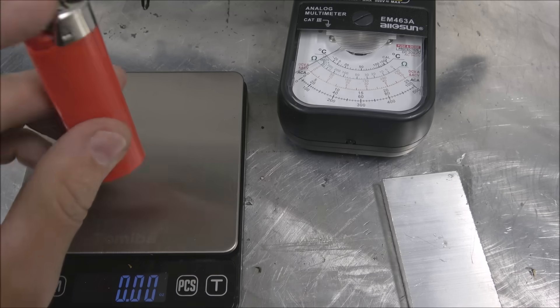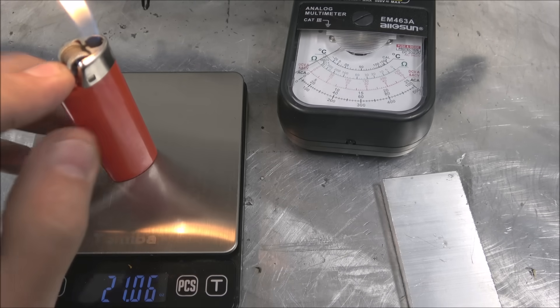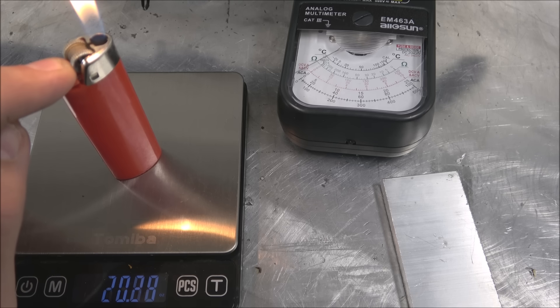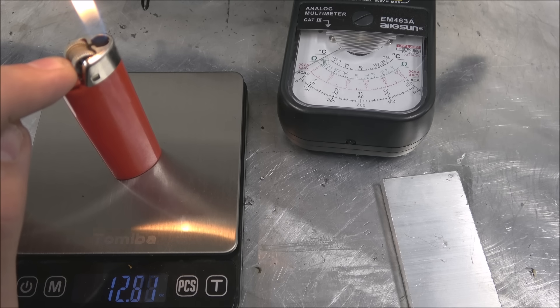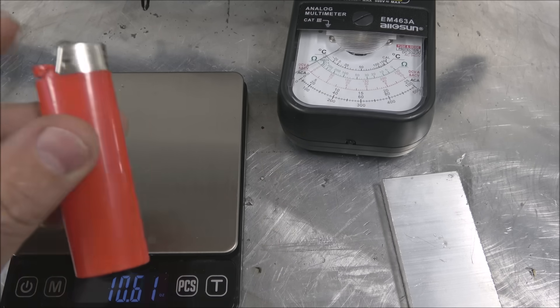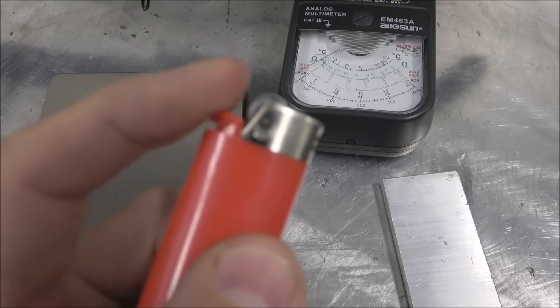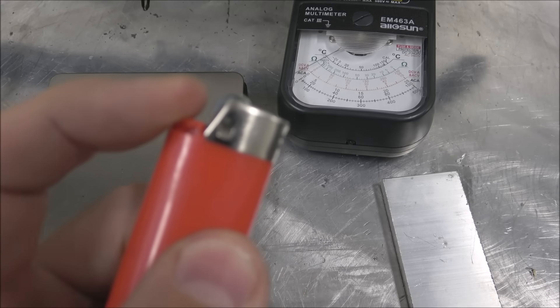The closest thing I usually compare it to is just keeping the pressure required to keep a BIC lighter lit. This starts gassing out at about the same pressure. So not that much. If you can sit there and hold a BIC lighter like that then you're good to go.